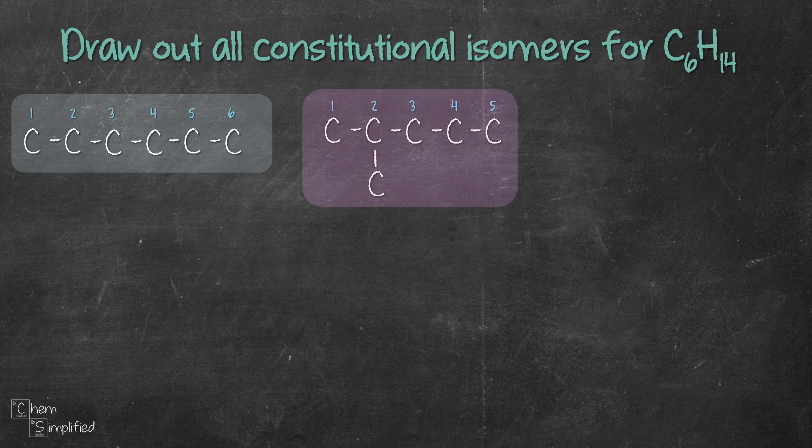Continuing on with the 5 carbon chain, but now we place that extra carbon in the middle. There's no other way we can place the extra carbon on a 5 carbon chain, so we have exhausted all possibilities for 5 carbon chain.